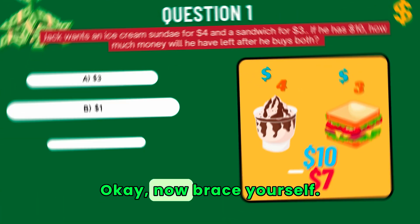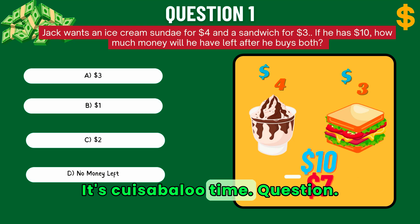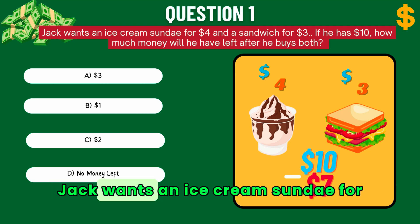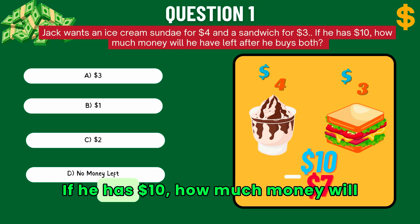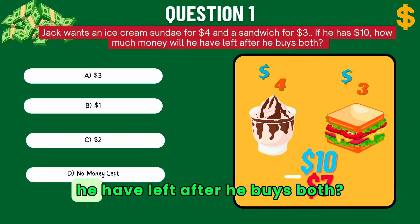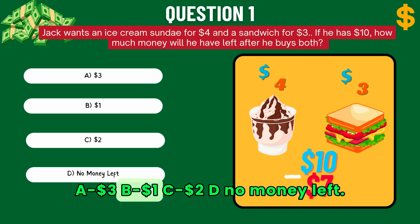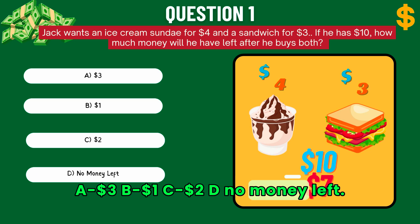Okay, now brace yourself — it's quiz time! Question: Jack wants an ice cream sundae for $4 and a sandwich for $3. If he has $10, how much money will he have left after he buys both? A. $3, B. $1, C. $2, D. No money left.